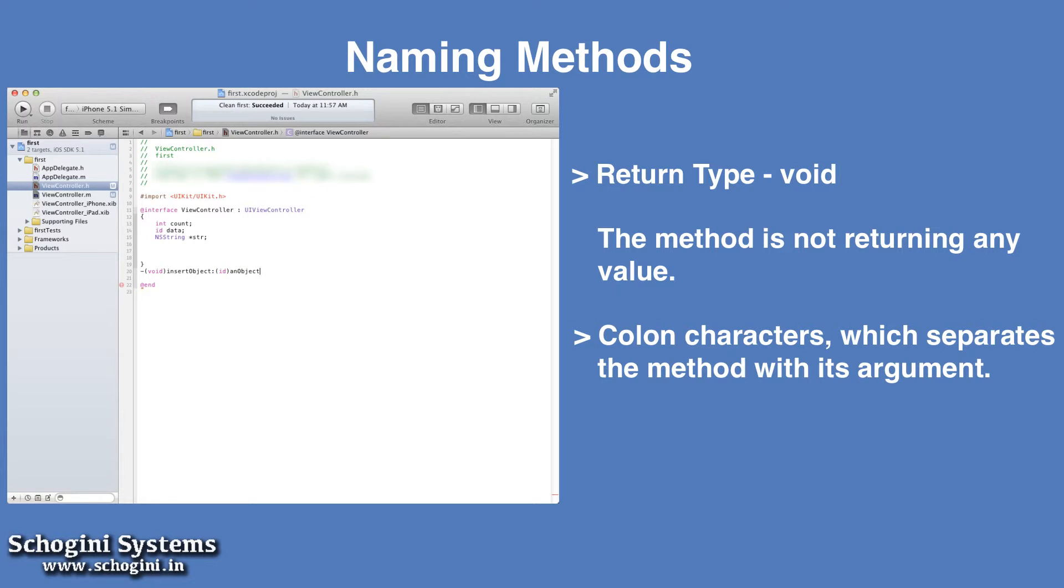If a method has no parameters, we omit the colon after the first signature keyword. In this example, the method takes two parameters.